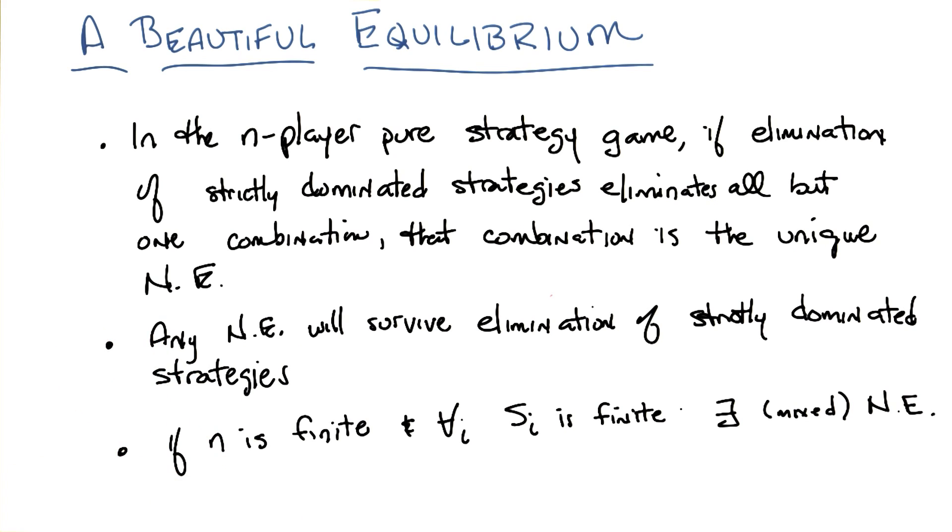So that's what happened in prisoner's dilemma. We got rid of all but one option and that option had to be the unique Nash equilibrium. You say eliminate all of them - is it possible that things we couldn't eliminate in one round, we could eliminate in the next round?